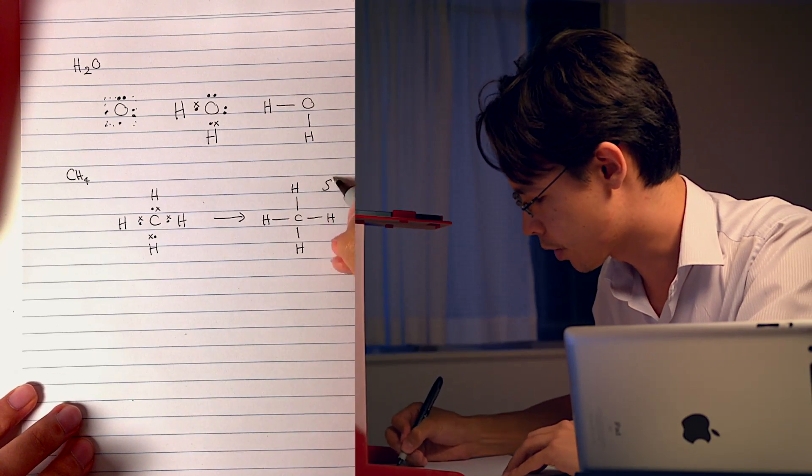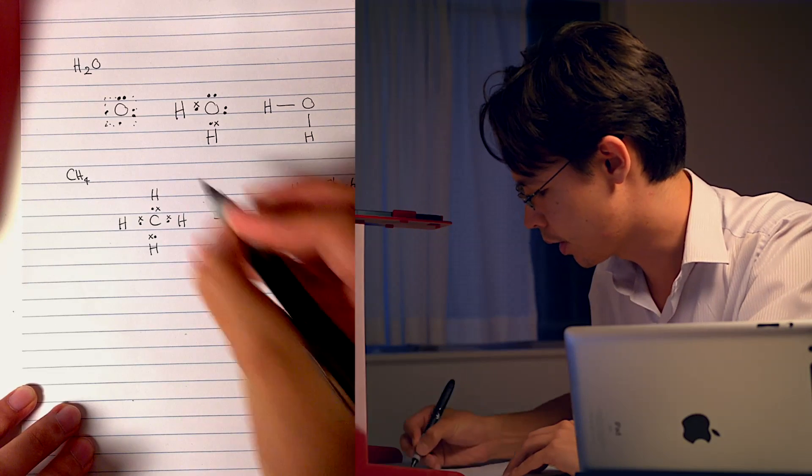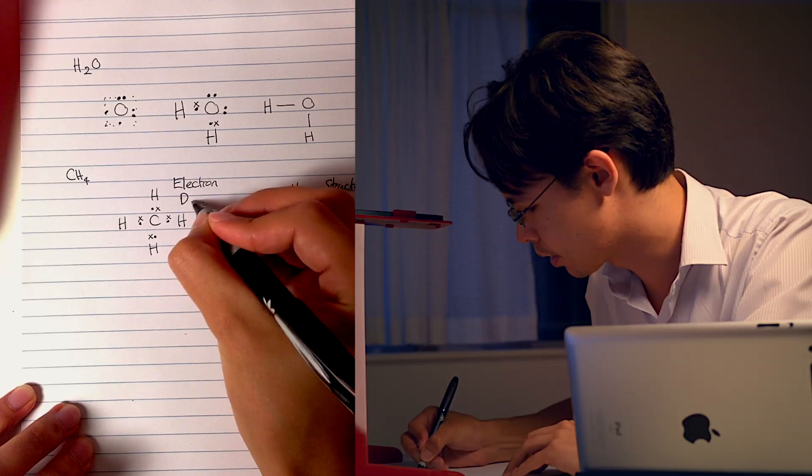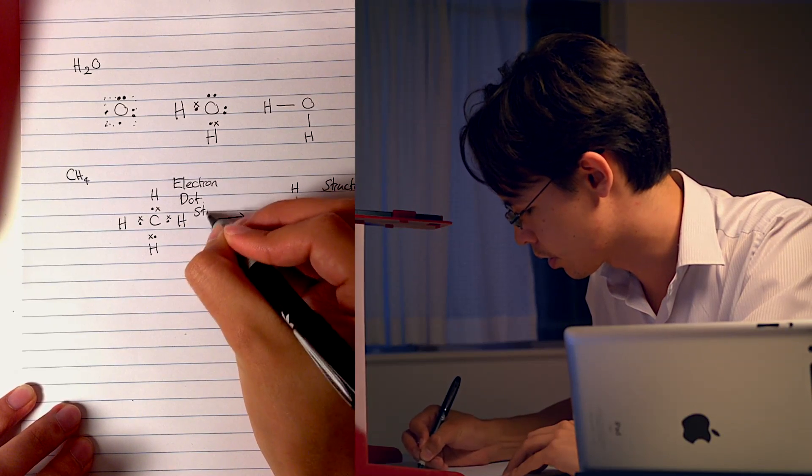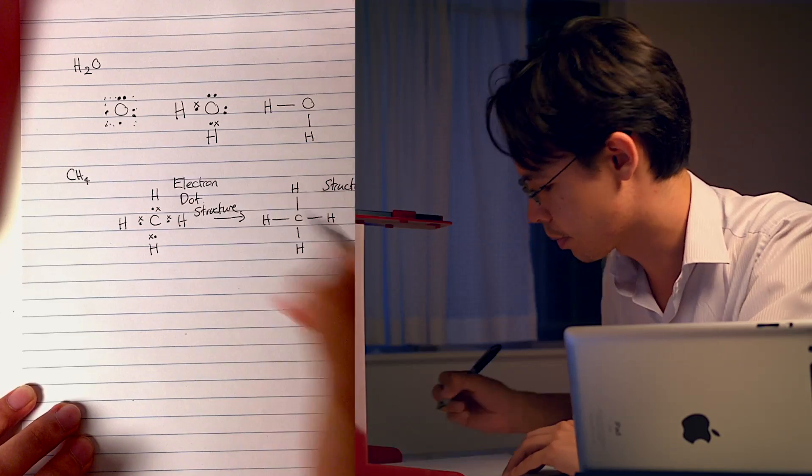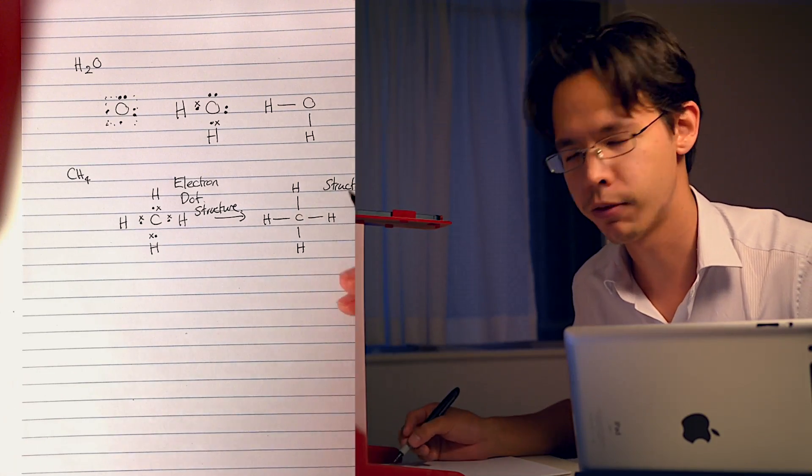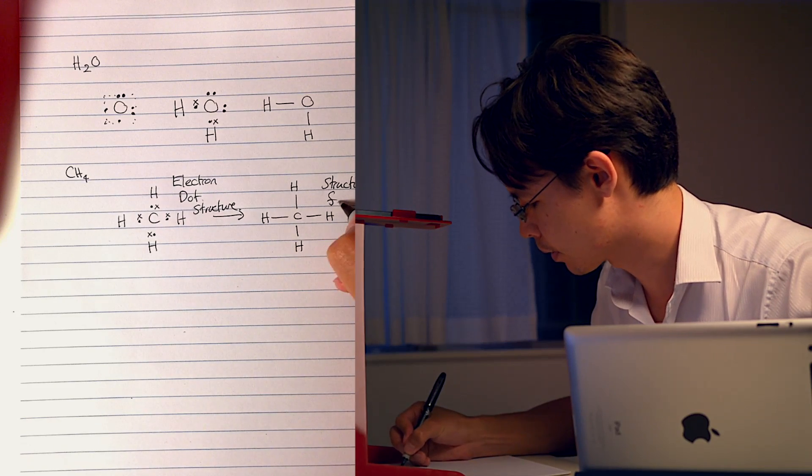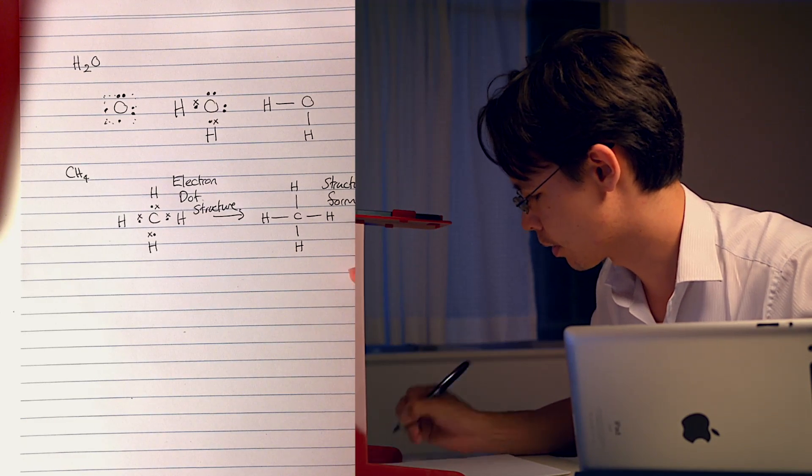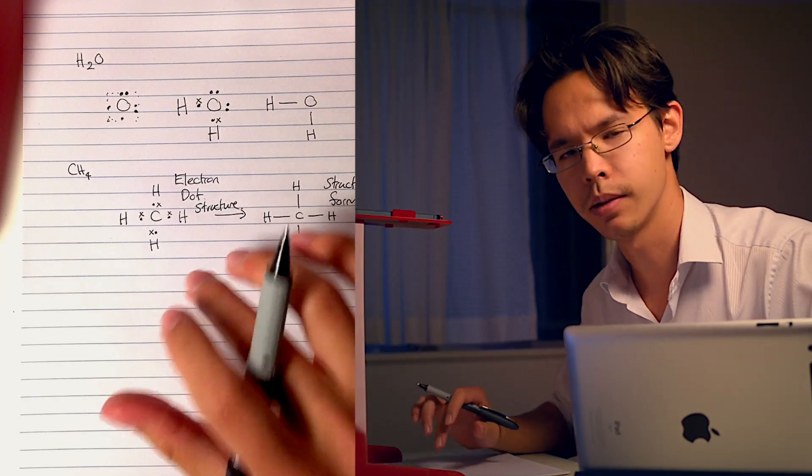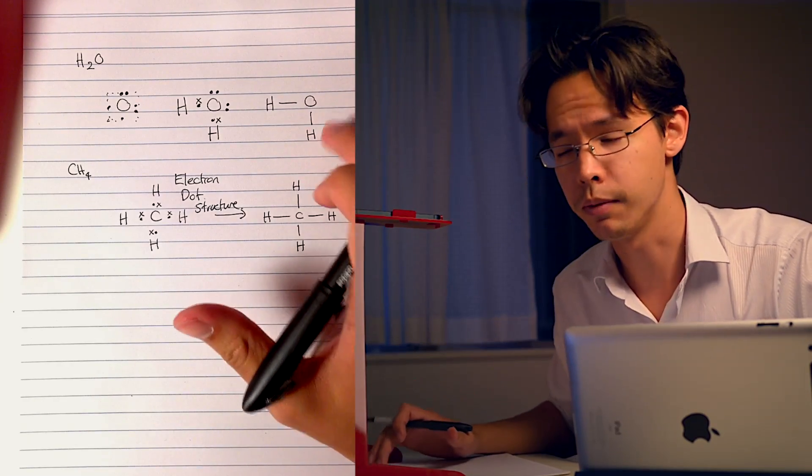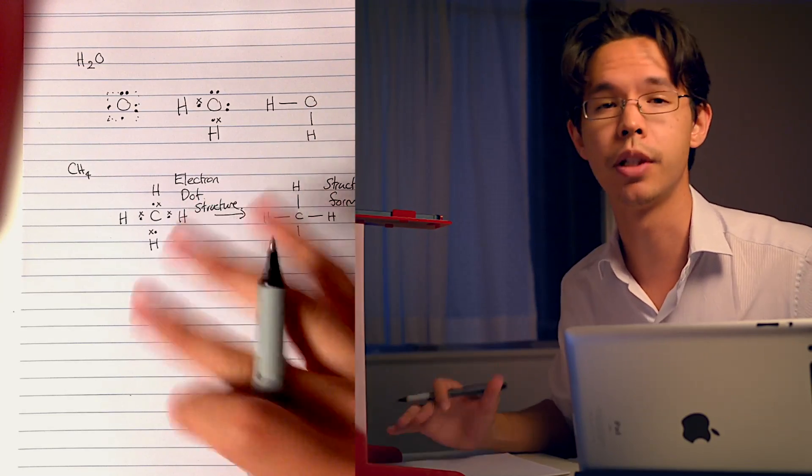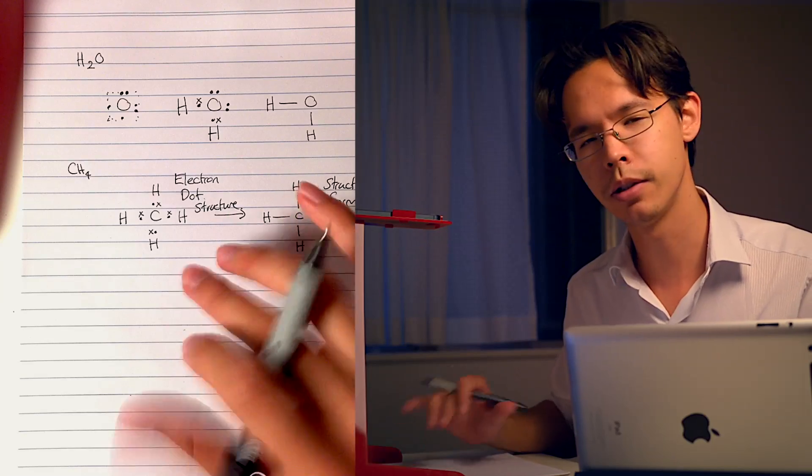This is the electron dot structure. The textbook might have referred to this as structural formula. That's what we can imagine it in two dimensions, but we know that molecules can be three-dimensional, and how do you know what shape they will be?